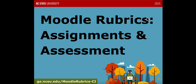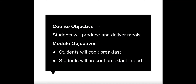In this video, we're going to cover a little bit about Moodle rubrics, which are a specific kind of assessment related to Moodle assignments and Moodle forums. We're going to pretend that we're doing an assignment in which we have a course objective that students will produce and deliver meals, and a module objective specific to our assignment that students will cook breakfast and present breakfast in bed.